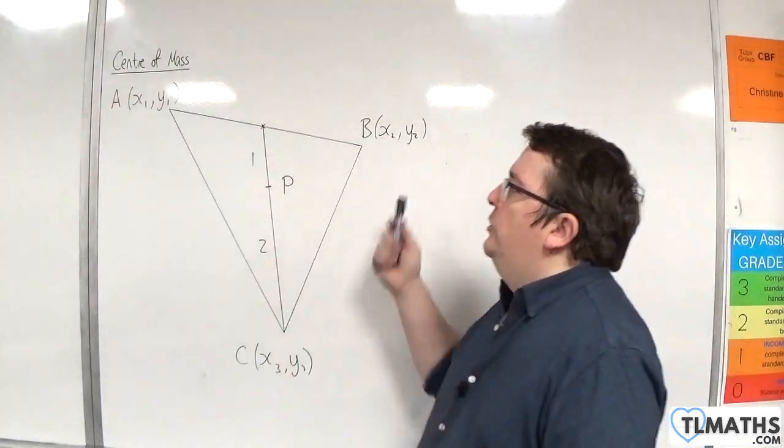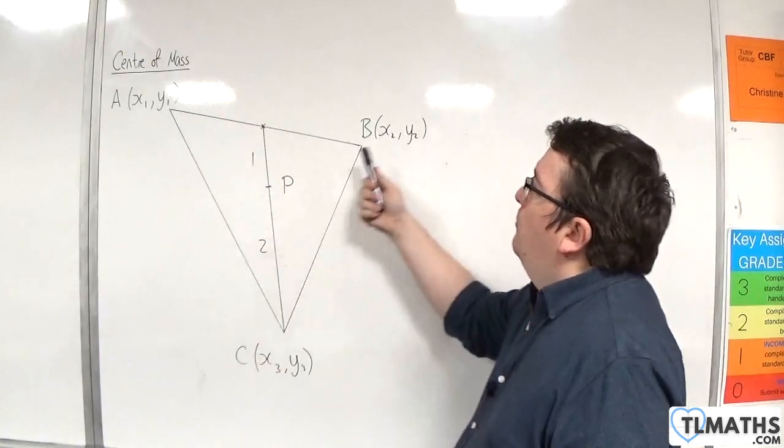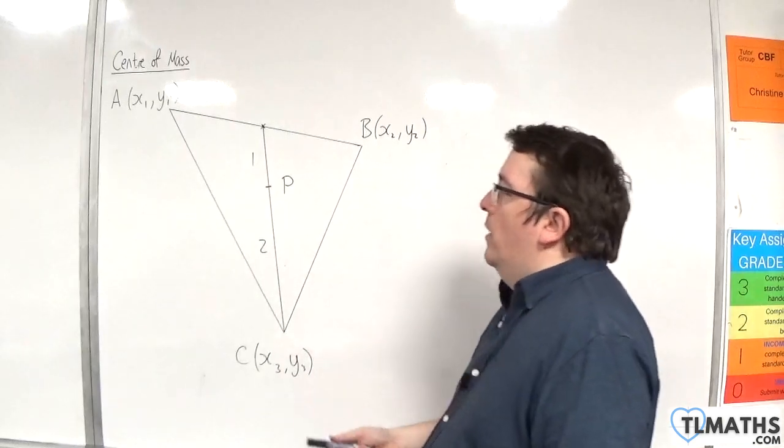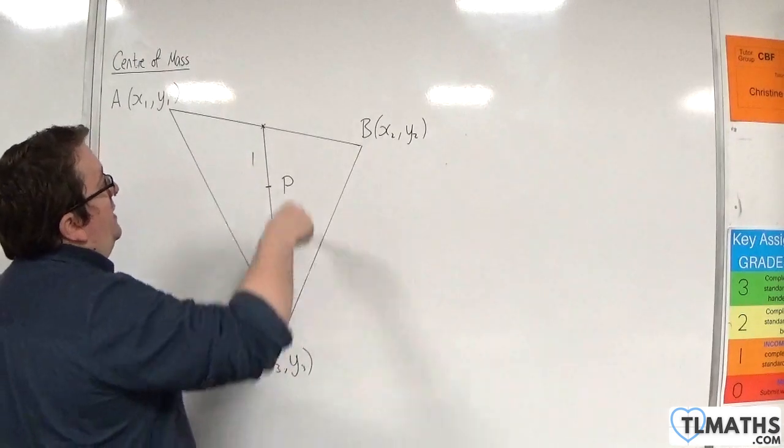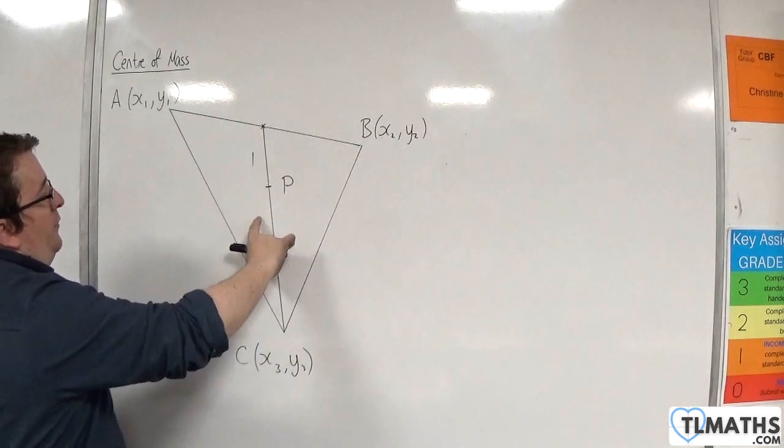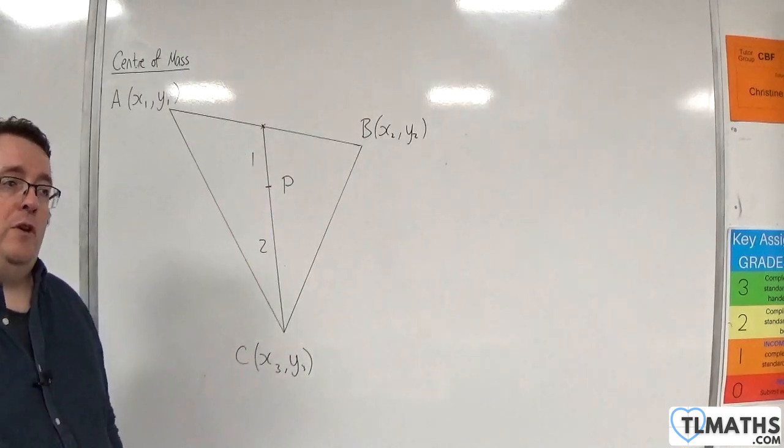So, I've drawn a general triangle. It has coordinates A(X1, Y1), point B has coordinates X2, Y2, and C has coordinates X3, Y3. I've drawn on a median going from C to the midpoint of AB, splitting it up into the ratio of 2 to 1, so that P is the centre of mass, the point I'm interested in.